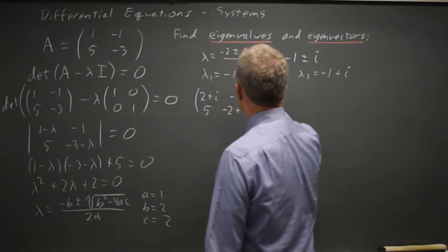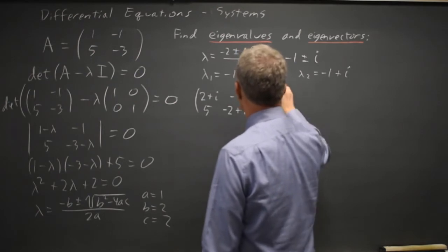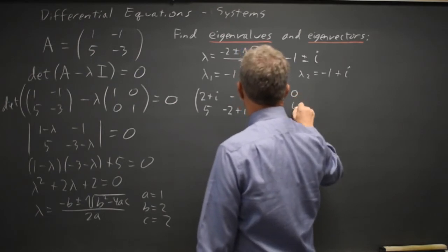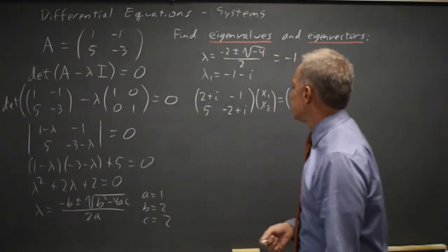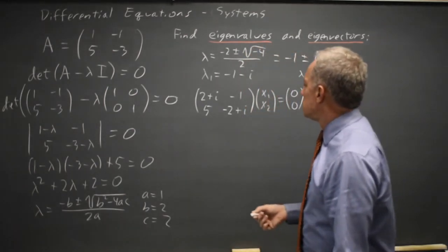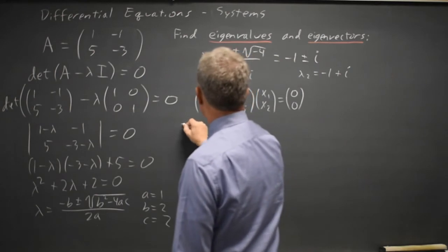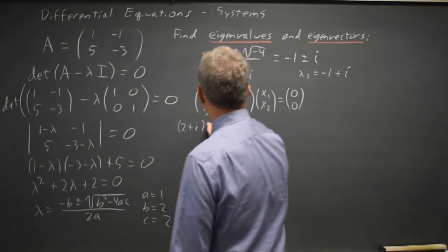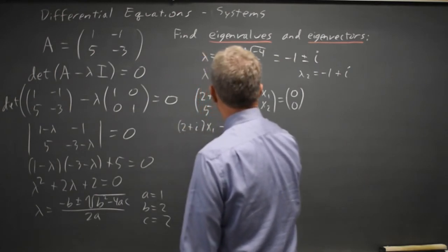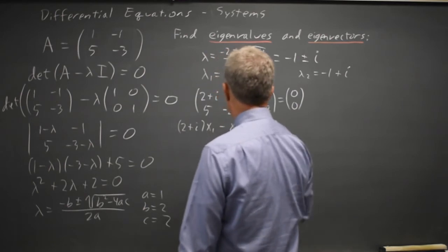This times vector x, [x1, x2] equals the 0 vector. The first row tells me that (2 plus i)x1 minus x2 equals 0.